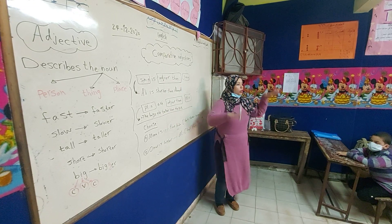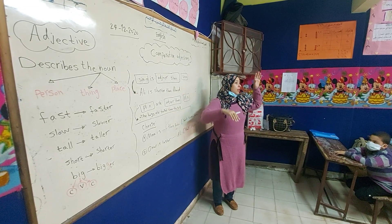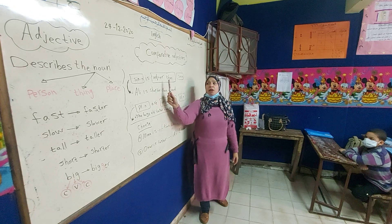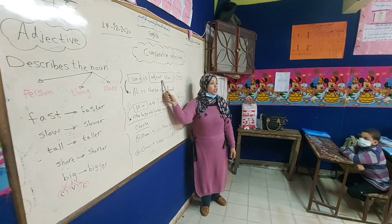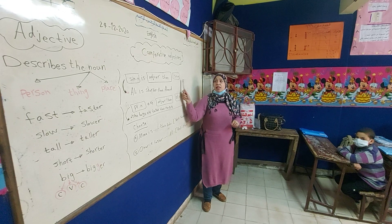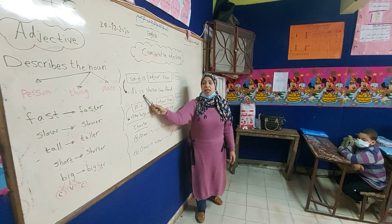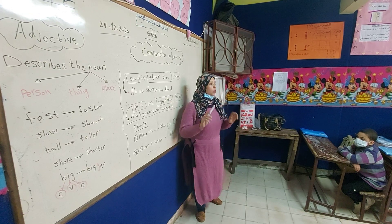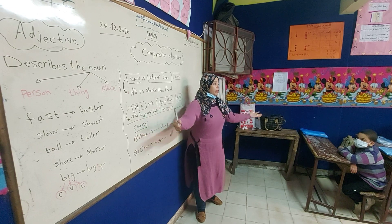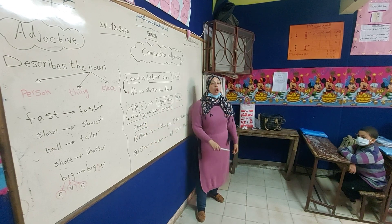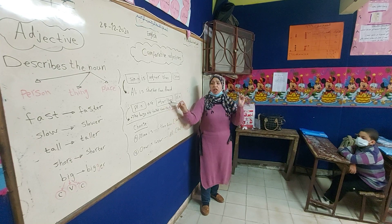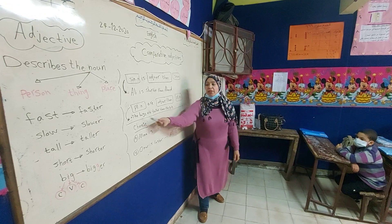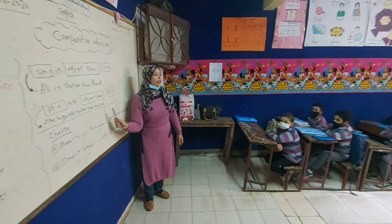For example, if I want to compare between two things and the first thing is a singular noun, I use 'is.' In the middle I put the adjective plus '-er,' then 'than,' then the second singular noun. For example: Ali is shorter than Ahmad. If the subject is a plural noun, it takes 'are.' For example: The boys are taller than the girls.